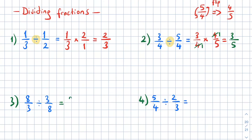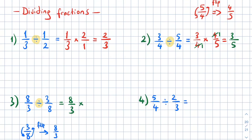Question three: keep the first fraction eight over three, change the operation into multiplication, then flip the second fraction three over eight. Three goes down, eight goes up, giving us eight over three. We replace three over eight with eight over three.